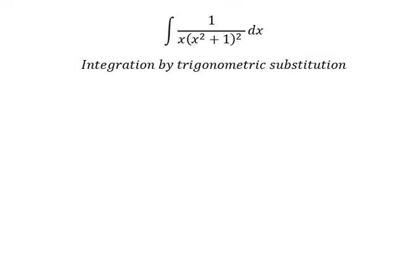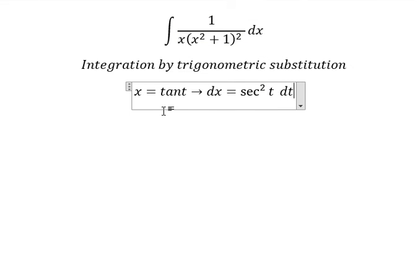So I will put x equals to tan t. Because if I put this one here, we have tan t squared plus 1, which changes to secant of t squared. And then we simplify by dx. dx we have secant of t squared dt after doing first derivative of tan t.